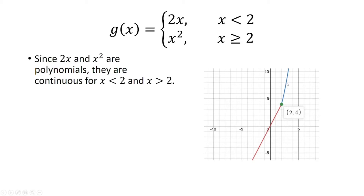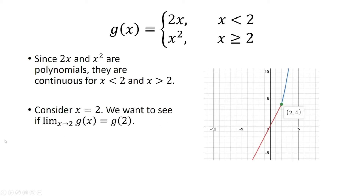Since the line y equals 2x and x squared are polynomials, we know that they're going to be continuous for x less than 2 and x greater than 2. But now the question is, what happens at x equals 2? So this is what we're interested in looking at.